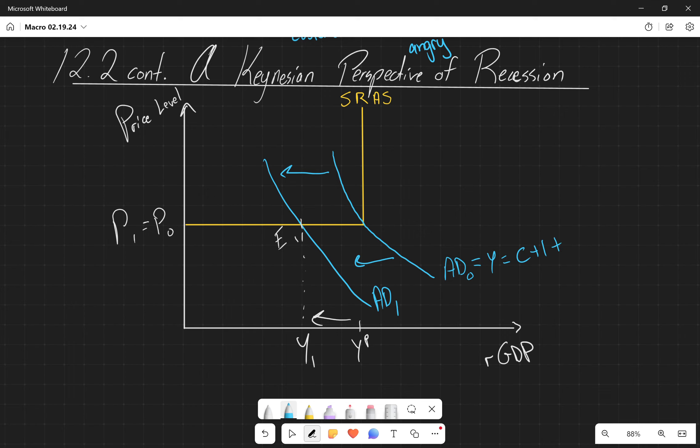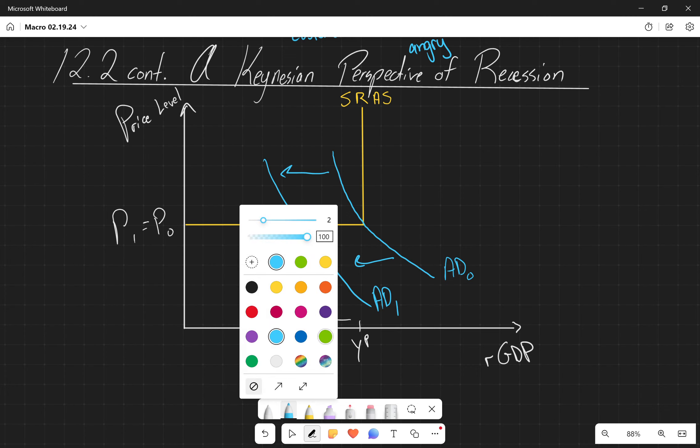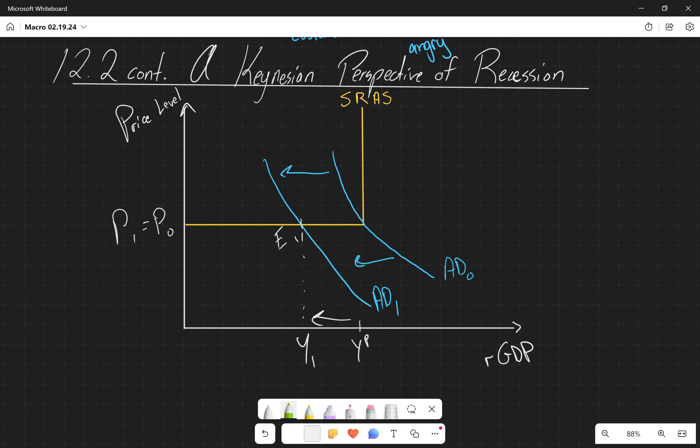And so if the government comes in, sees what's happening, and either cuts taxes or increases government spending, they can shift the aggregate demand, hopefully all the way back, but at least close to the initial aggregate demand. And we end up with E3 and Y2.